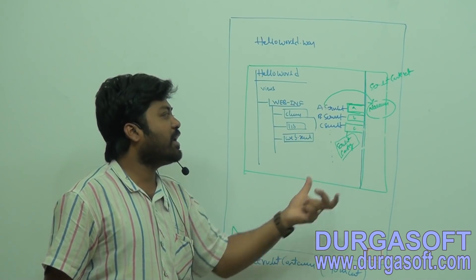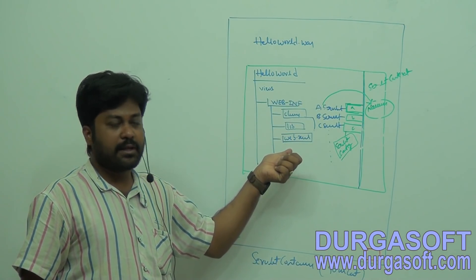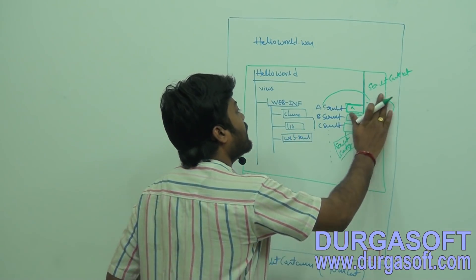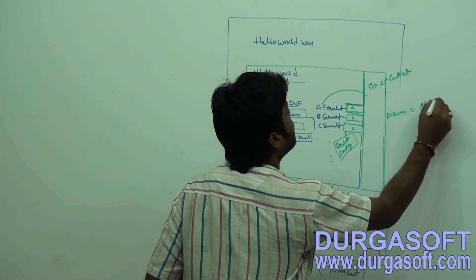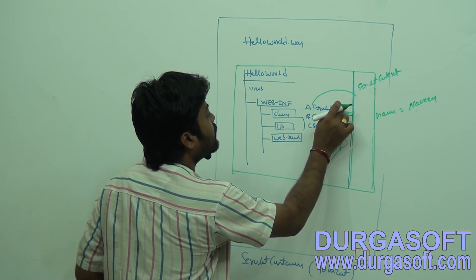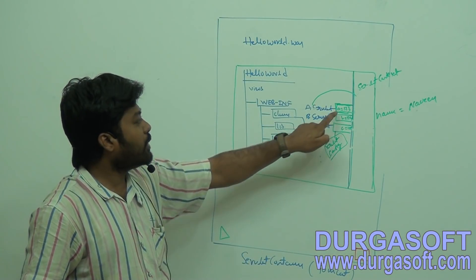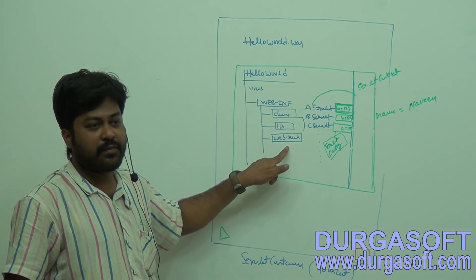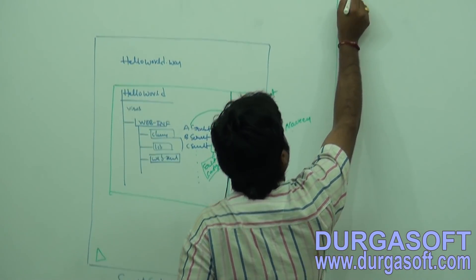How can you put common data into the context from the web.xml? Inside web.xml, you can put some data; the container will read it and keep it in the context object and config object. If you want to put data under context, you store it in the ServletContext. Inside web.xml, the main root tag is web-app. In between the web-app tags, you can configure any number of servlets: servlet name, servlet class.